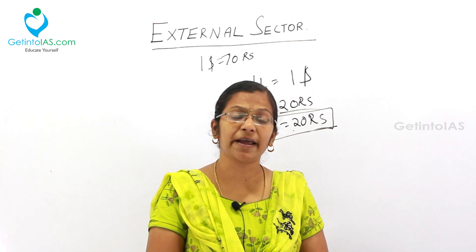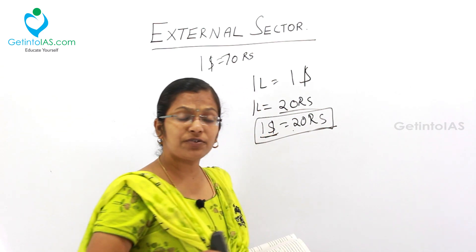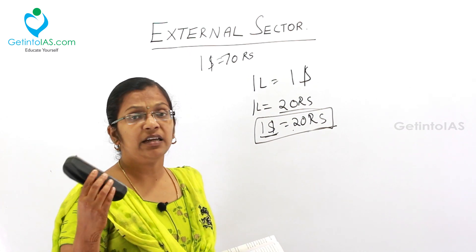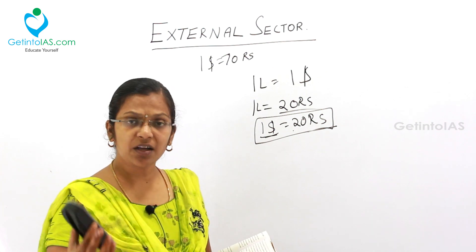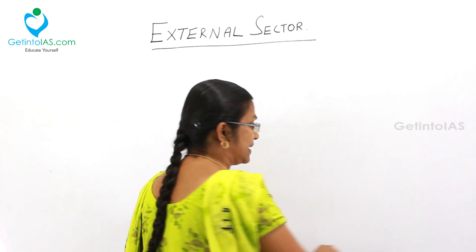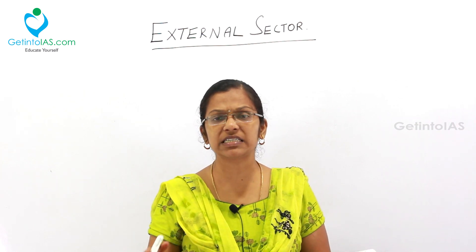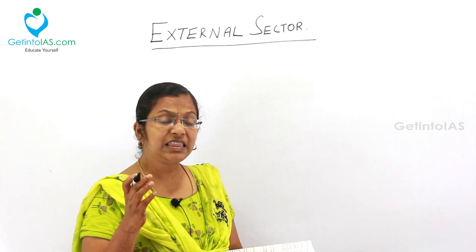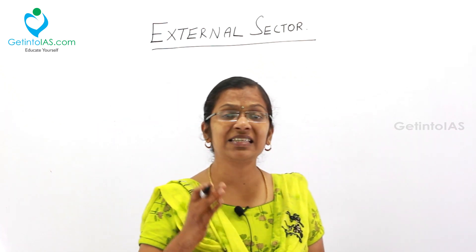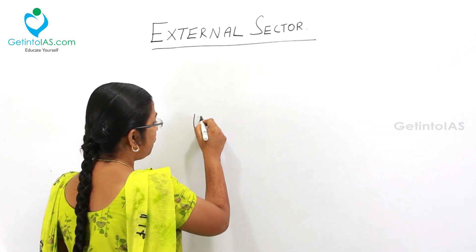Now, there are types of currencies you come across in your books: hard currency, soft currency, cheap money, and dear money. You would be coming across these in question papers as well, so we need to know what these types of currencies are. The first type is hard currency — the strongest currency in the world which has the highest level of liquidity.